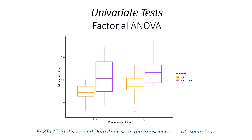This video introduces factorial analysis of variance, or ANOVA, which is a technique that you might use to evaluate whether some continuous outcome differs significantly between groups when those groups are based on two or more variables.